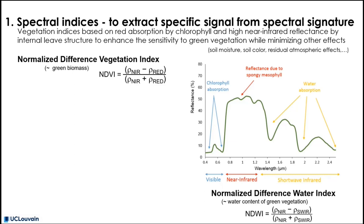In order to extract a specific signal from a spectral signature, many spectral indices can be computed. When looking at the signature of green vegetation on the right, we can ask what is very specific to the spectral signature of green vegetation.